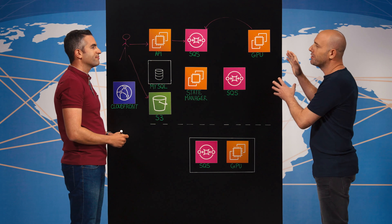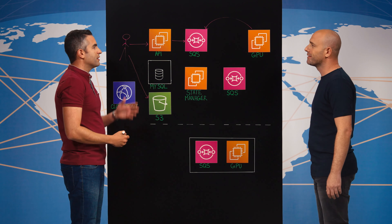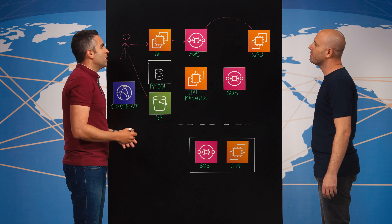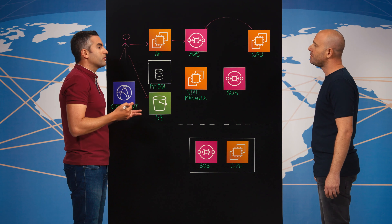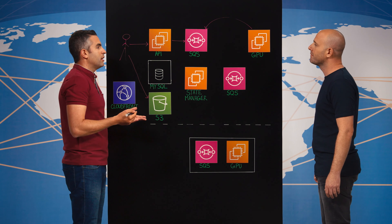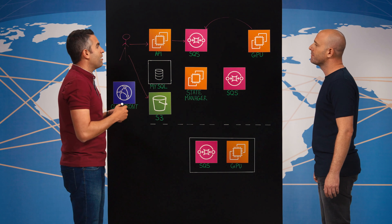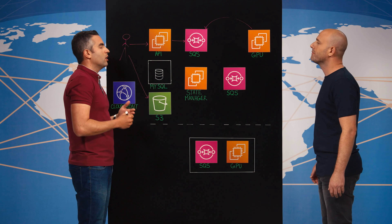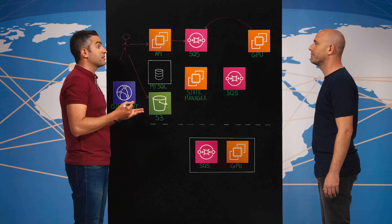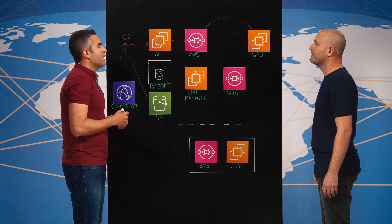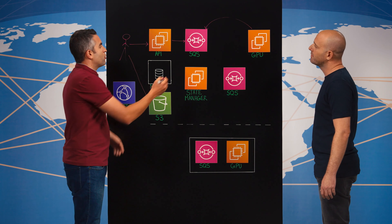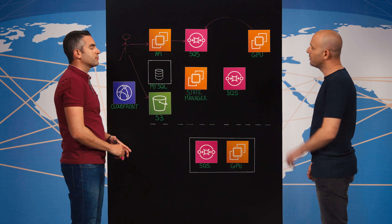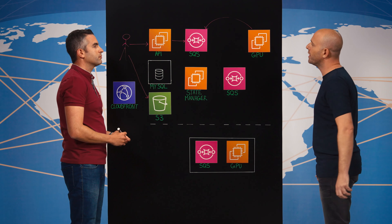This fleet is managed with an auto scaling group that allows us to scale in and out according to the current volume of traffic. We have GPU instances with basic on-demand capacity and spot instances right on top of it. The scale is controlled by the number of input messages in the main queue.